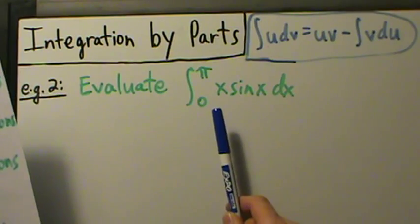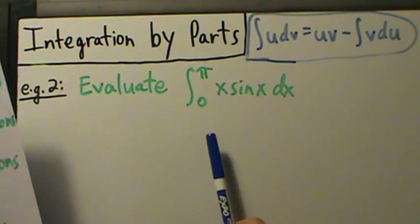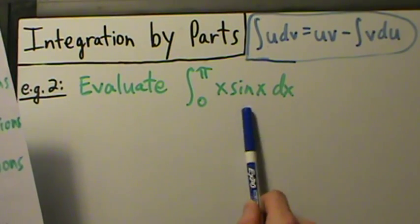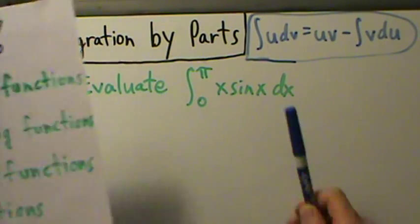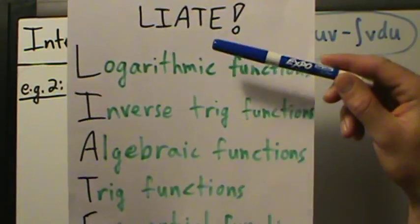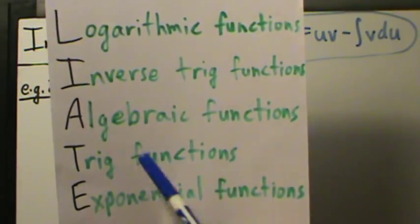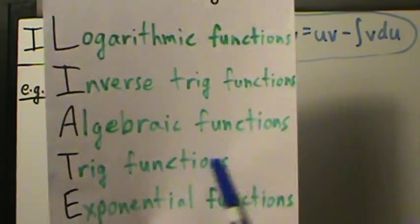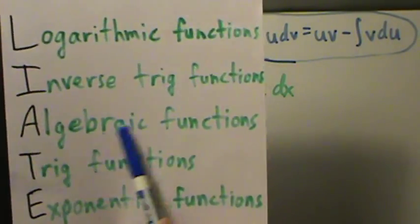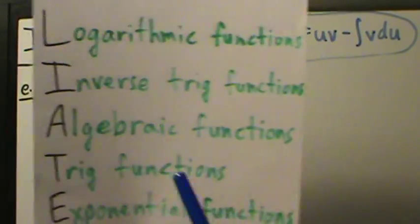We want to integrate x times sine of x dx from 0 to π. So x is an algebraic function, and sine of x is a trig function. Which one appears higher up on the LIATE list? Logs, inverse trig, algebraic, trig, and exponential. So we have algebraic and trig here, and algebraic appears higher, so we choose u to be the algebraic function.